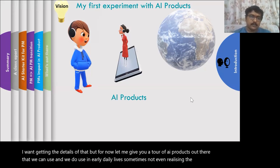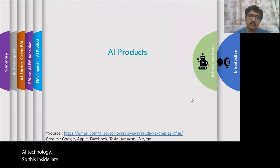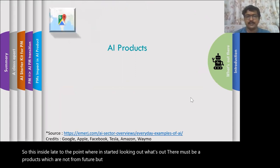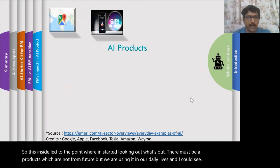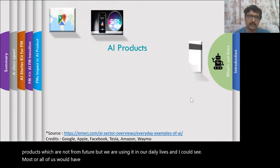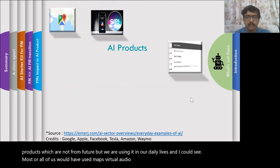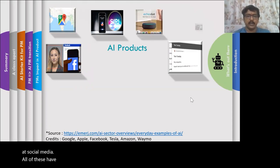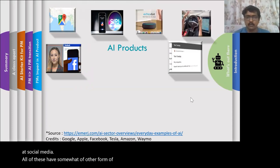This insight led me to start looking at what's out there. There must be AI products which are not from the future but we are using them in our daily lives. I could see most or all of us would have used maps, virtual audio assistants, digital assistants, auto-completion when doing emails, and when on your leisure looking at social media — all of these have some form of AI embedded within them, and even in autonomous cars.